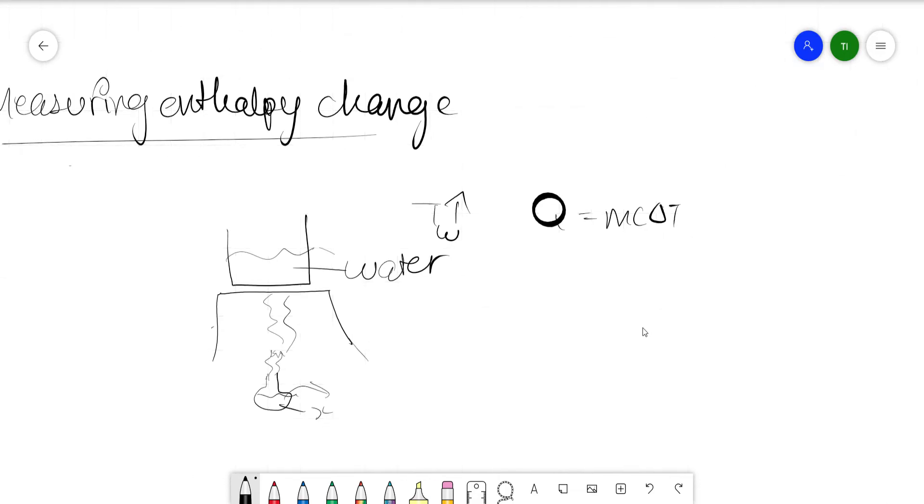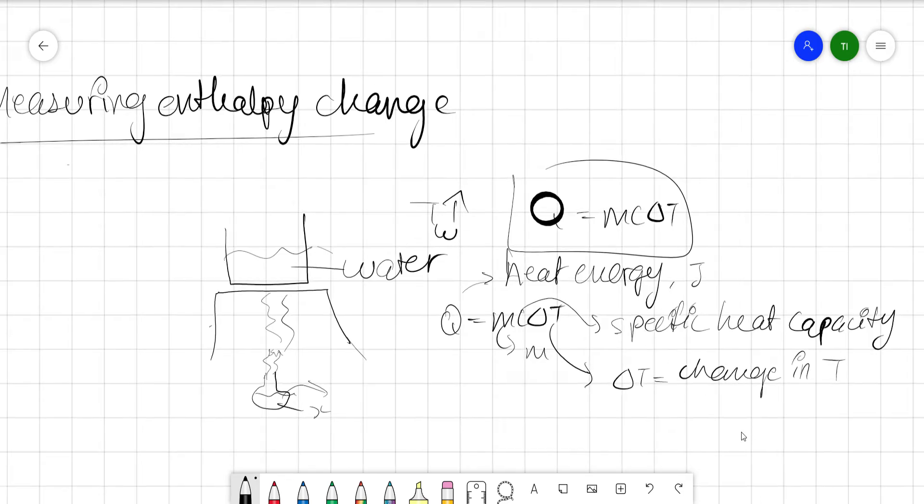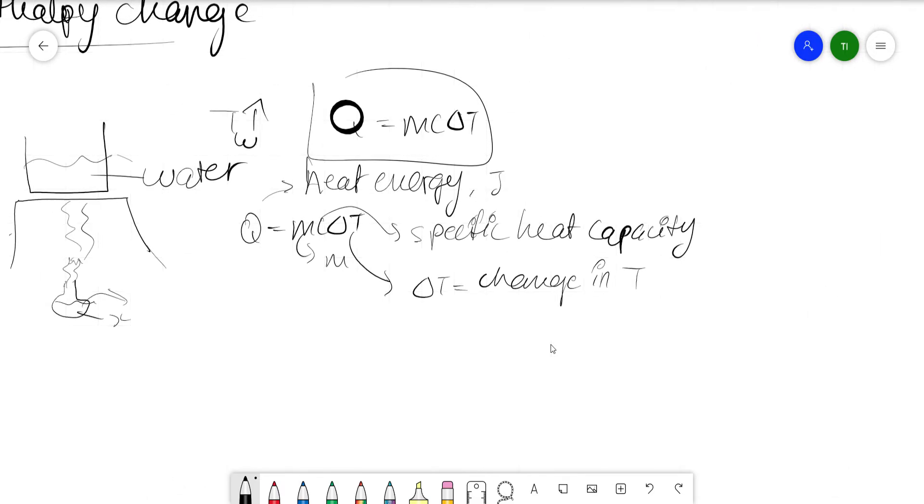Let's get into depth of this formula: Q equals mc delta T, where Q is the heat energy in joules, m is the mass, c is the specific heat capacity, and delta T is the change in temperature. You should be familiar with this by now because delta usually means a change in something.